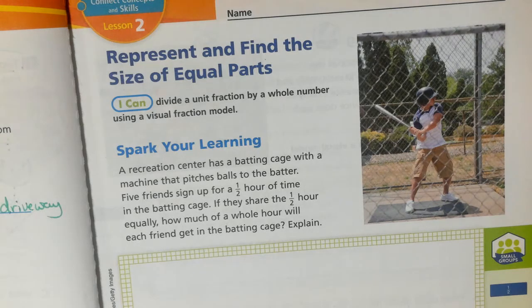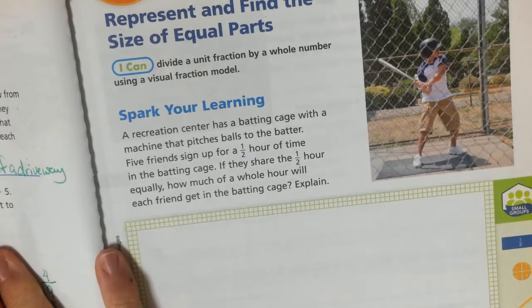Hi, fifth graders. We are now on to Module 10, Lesson 2. We're going to be representing and finding the size of equal parts. This is taking a fraction and dividing it by a whole number. I'm going to show you how that's going to work.